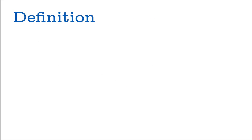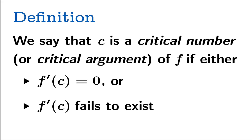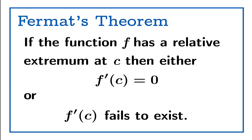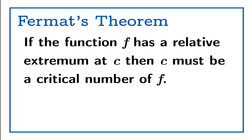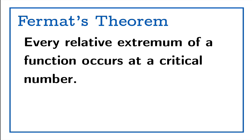We're going to define a critical number, or critical argument, of a function f to be a number c for which either f'(c) is zero or f'(c) fails to exist. With this definition, Fermat's theorem becomes much easier to state: if the function f has a relative extremum at c, then c must be a critical number of f. Or equivalently, every relative extremum of a function occurs at a critical argument.